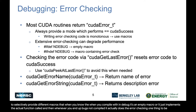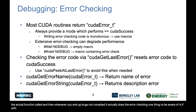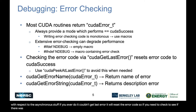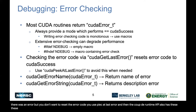One thing to be aware of with respect to that asynchronous behavior: if you ever do a cudaGetLastError, it will reset the error code. So if you need to check whether there was an error but don't want to reset the error code, you use peekAtLastError. The CUDA runtime API also has functions for getting descriptions and names of the error.